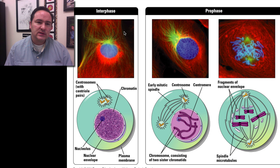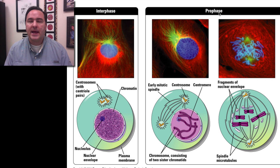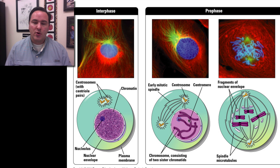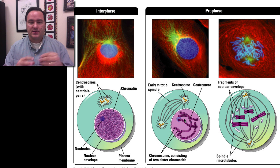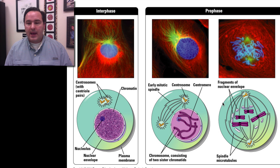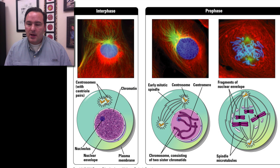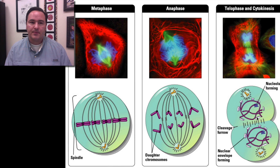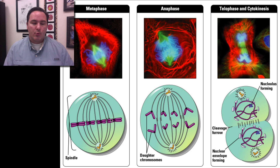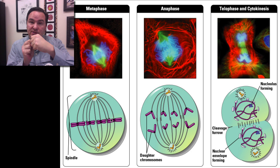So in mitosis, we have interphase first, which is not part of mitosis itself. Then we go into mitosis. The first phase is called prophase — this is where chromosomes condense and start to arrange themselves, and the mitotic spindle begins to form. At the end of prophase, the nuclear envelope starts to break down and the spindle fibers attach to the centromeres of the chromosomes and start to tug on them. Going into metaphase, the chromosomes are now all lined up along the midline of the cell, ready to have those sister chromatids separated.